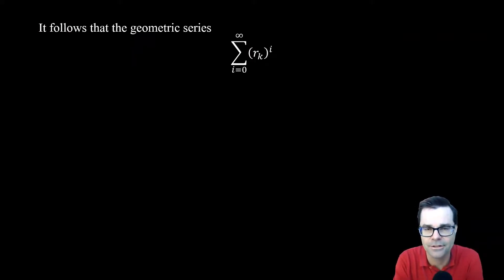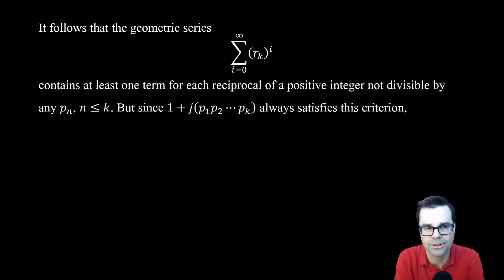So if we look at the entire geometric series formed by these terms, then we'll see that we're going to get all of those different terms. This geometric series will contain at least one term for every reciprocal of a positive integer,